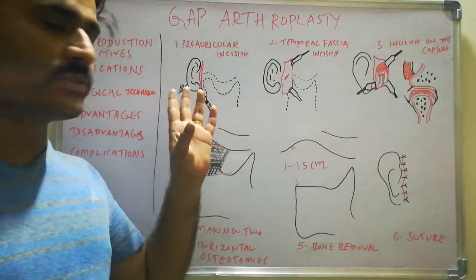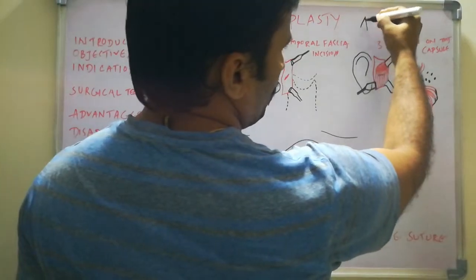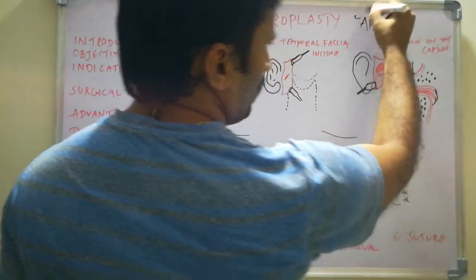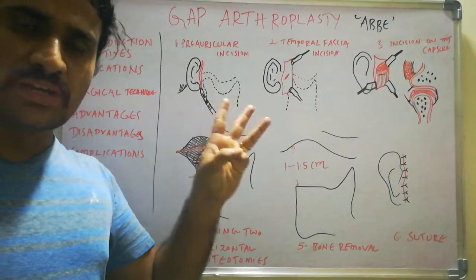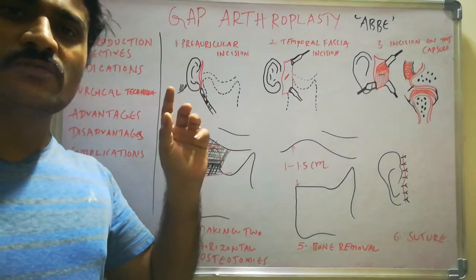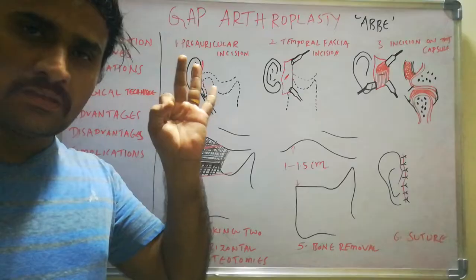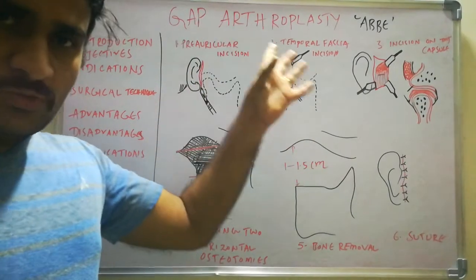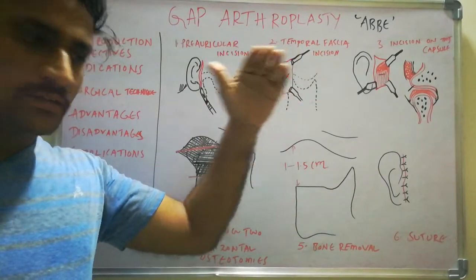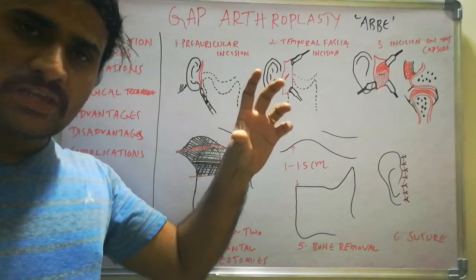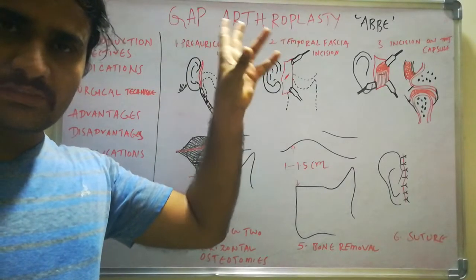In this video we will discuss gap arthroplasty. This was first described by Abbe as one of the treatment options for TMJ ankylosis. There are three mainstay treatment options for TMJ ankylosis: condylectomy, gap arthroplasty, and interpositional arthroplasty. Gap arthroplasty is the creation of a gap between the glenoid fossa and the remaining ramus stump after excision of the ankylosed mass.